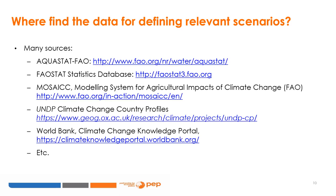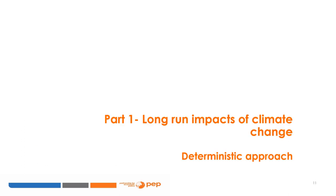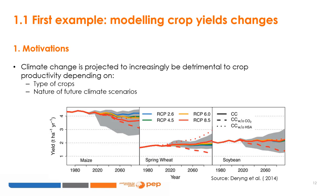Long-run changes in mean climate and shorter-run changes in climate variability do not affect the agricultural sector in the same way. Accordingly, we chose to distinguish these two elements in this module. As a starting point, we will focus on the long-run impacts of climate change. This assessment can be conducted with a deterministic approach by using the results of agronomic studies, which predict the consequences of mean climate change with sufficient confidence. There is a wide range of long-run climate change-related impacts on the agricultural sector that can be analyzed with the PEP1T model. In this capsule, we first chose to focus on the impacts on crop yields.